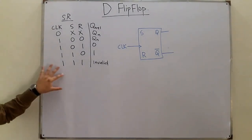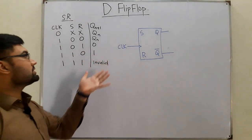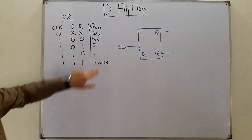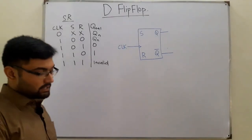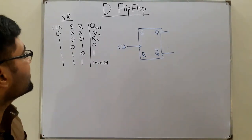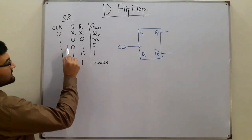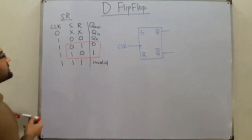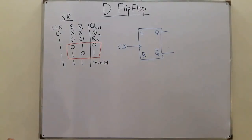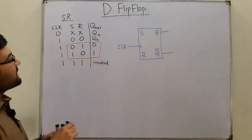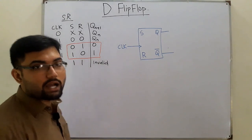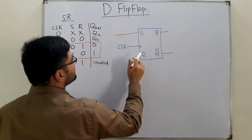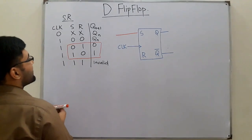From the truth table, when both inputs are the same, it either results in a memory state or an invalid state. For zero-zero it is memory, and for one-one it is an invalid state. So our concern is these two configurations: when S is zero and R is one, and when S is one and R is zero. The SR flip-flop operates when the two inputs are opposite to each other.